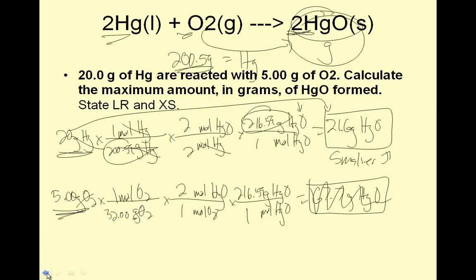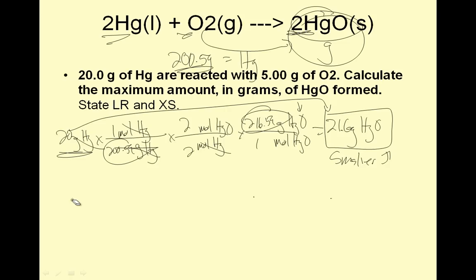To find the excess reactant, I convert my limiting reactant into my excess reactant. My limiting reactant is the one that limits how much is made. If I add more mercury, I'll get more product. So, to find the excess, I take my limiting reactant, which is 20 grams of Hg, and convert that into grams of O2. 1 mole of Hg is 200.59 grams. I'm trying to go into grams of O2.